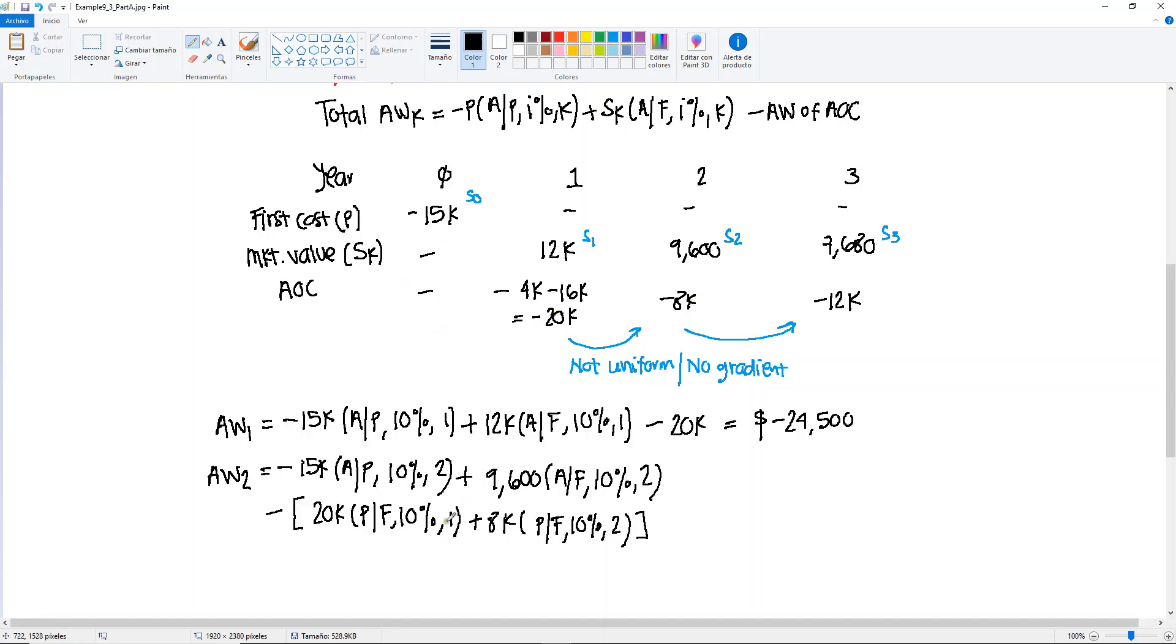This right here is a result of moving or finding the equivalent value in year zero from here and from there. I have added both values. Now, the next step is to distribute the amount that I have into equal amounts for three years. So all of this, I am going to multiply it times the factor for find A given P, 10%. And remember, well, it's only these two that I need to distribute right now. Let me close the parentheses early. Okay, so now I need to do this for two years only. And this will give us minus $18,357.